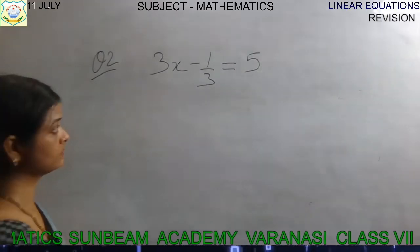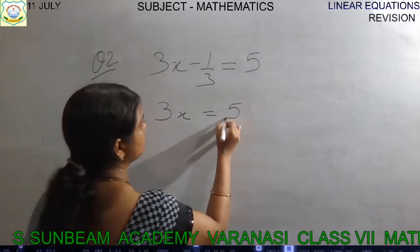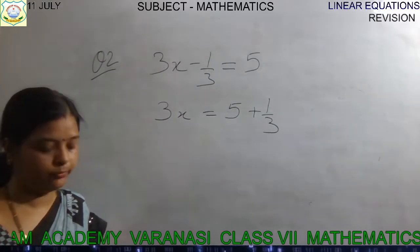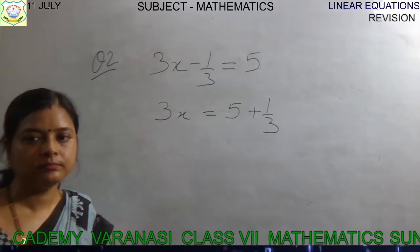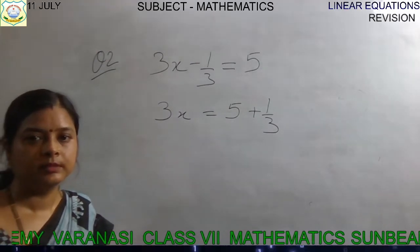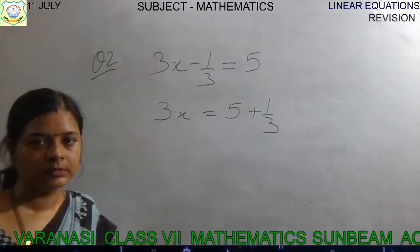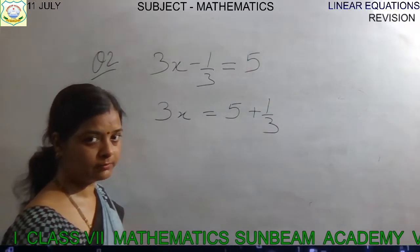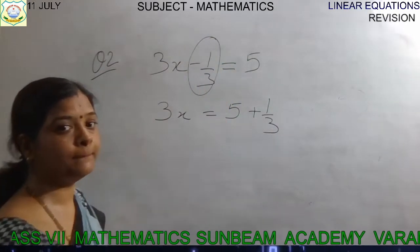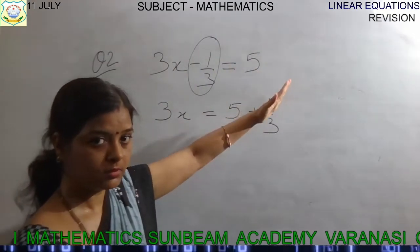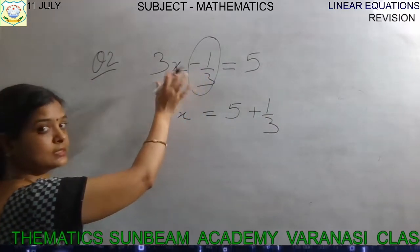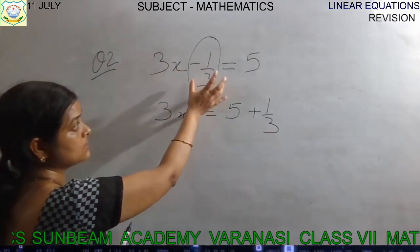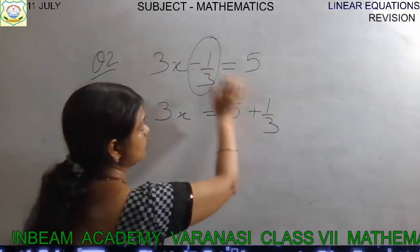I am waiting for your answer. When -1/3 is transposed to the other side, it becomes +1/3. The whole term is shifted, so minus becomes plus, as it is. These are separate terms so we transpose the whole term. Now, next step: solve the RHS. We can write 5 as 5/1 and solve by cross multiplication. 5 threes are 15, plus 1 into 1 divided by 3 ones are 3. So 3x = 16/3.